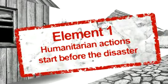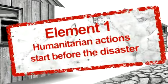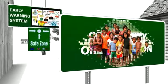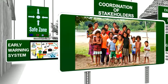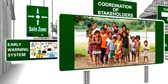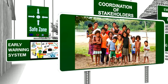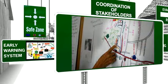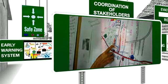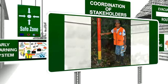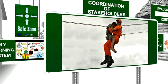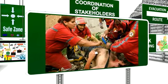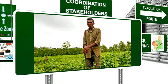Humanitarian action starts before the disaster. The more prepared a community is, the lower the impact of a disaster will be. This can be achieved, for instance, by identifying the threats, creating early warning systems, and training response brigades. Also, performing practice drills and protecting the livelihoods of the population.